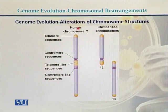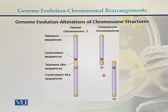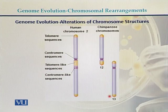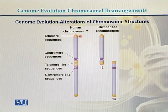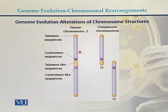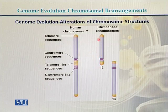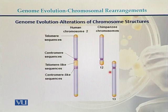Here we can see human chromosome number 2 alongside the chromosomes of the chimpanzee — chromosome 12 and chromosome 13 of the chimpanzee. Chromosome number 2 has homology with chimpanzee chromosome 12. Specifically, the p-arm of human chromosome 2 has homology with chimpanzee chromosome 12, and the q-arm of human chromosome 2 has homology with chimpanzee chromosome 13.